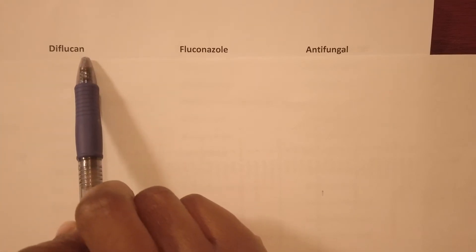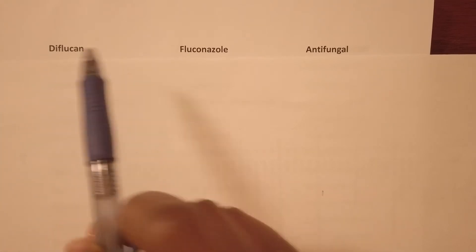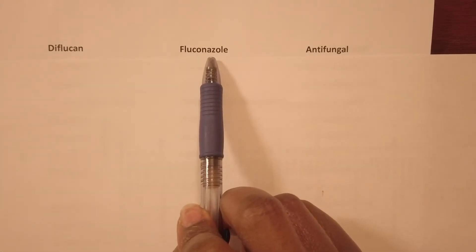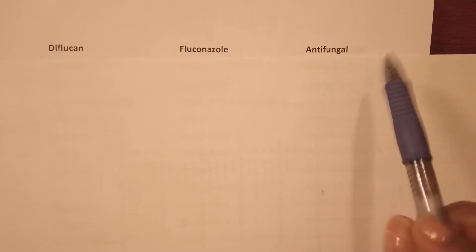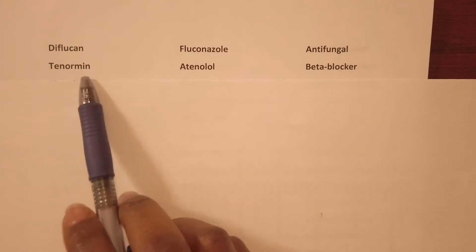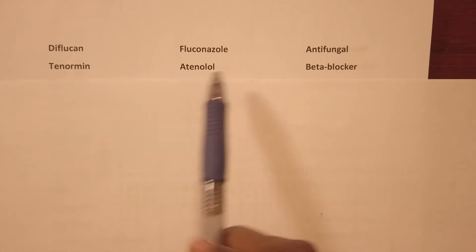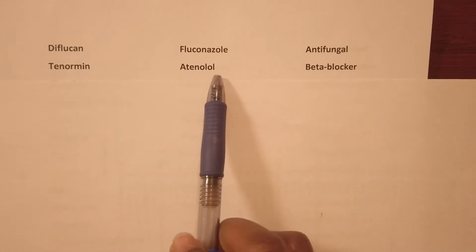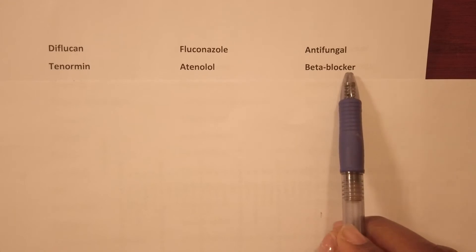When you review your top 200 drugs, you want to learn the drug name, the generic name, and the medication class. We have Diflucan, generic name fluconazole — it's an antifungal. We have Tenormin, generic name atenolol, and it belongs to the beta blocker class of drugs.